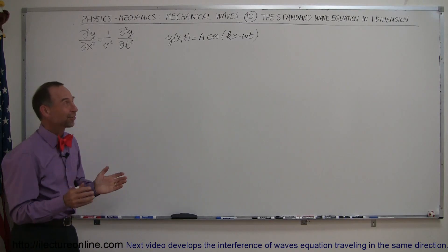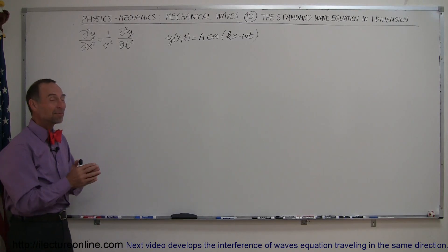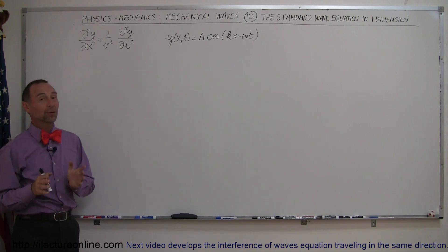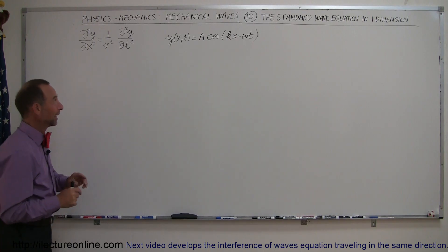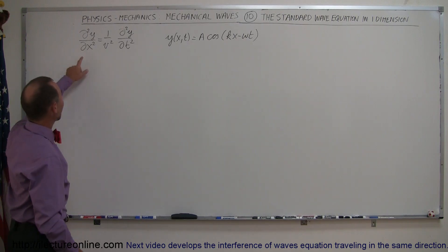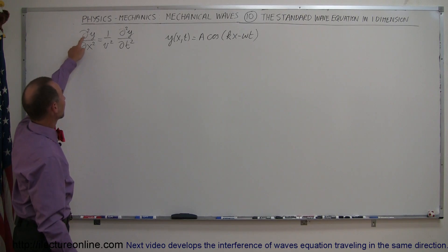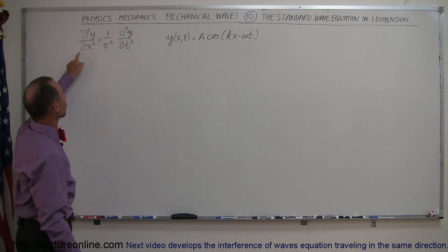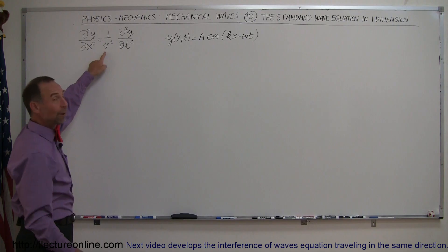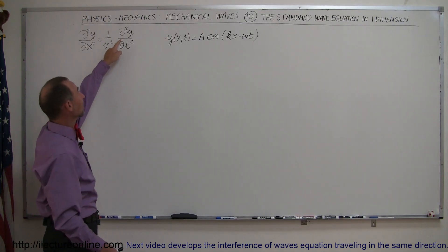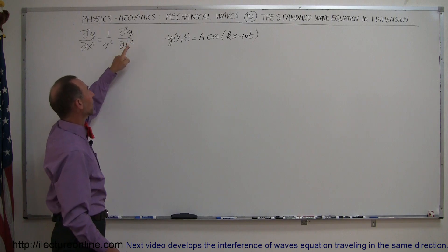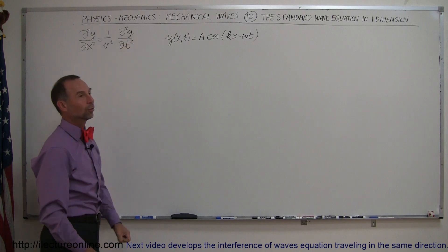Welcome to Ad Lecture Online, and now for something a little bit more complicated, a little bit more advanced: the standard wave equation, but we're only doing it in one dimension. We have the partial second derivative of the wave function y with respect to position equals 1 over the velocity of the wave squared times the partial second derivative of the wave function y with respect to time.